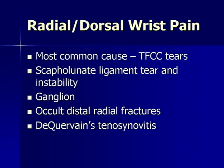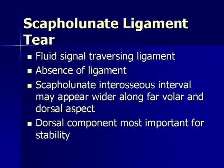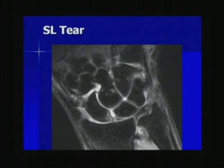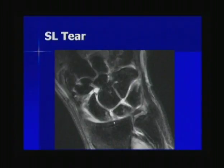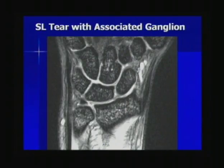Moving on to causes of radial or dorsal-sided wrist pain: the most common cause is still TFCC tears, but other possibilities include scapholunate ligament tears and instability, ganglions, occult distal radial fractures, and de Quervain's tenosynovitis. Scapholunate ligament tears can be diagnosed by looking for fluid signal traversing the ligament or absence of the ligament. Assessing scapholunate interval widening can be difficult on MRI and is better assessed with radiographs; the dorsal component is the most important for stability. Here you can see fluid signal traversing the scapholunate in the membranous portion, consistent with a tear.